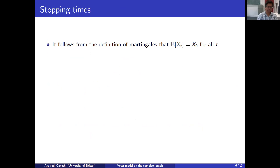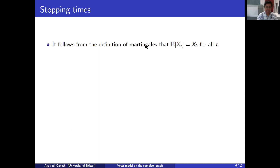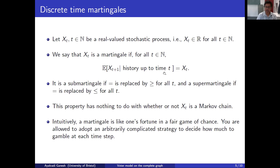A martingale is defined by saying the conditional expectation one time step later is the same as the current value. You can do this repeatedly, and by repeatedly using the tower rule, you can conclude that for a martingale, your expected fortune at any later fixed time t is the same as your initial fortune. In expectation, it cannot change if you are playing a fair game at every time step.